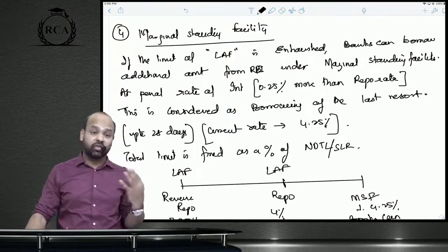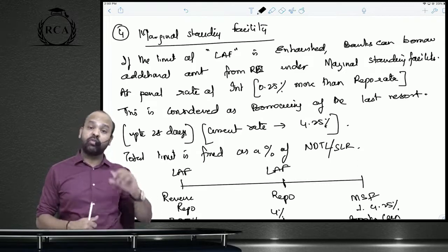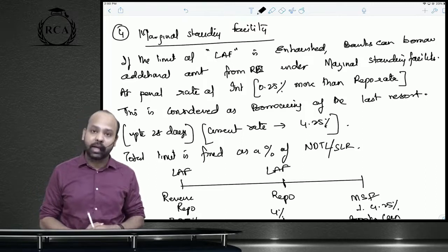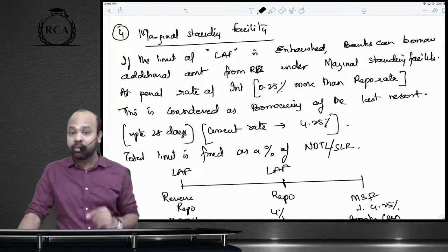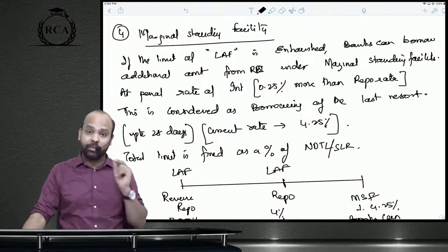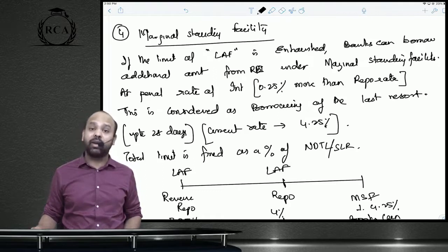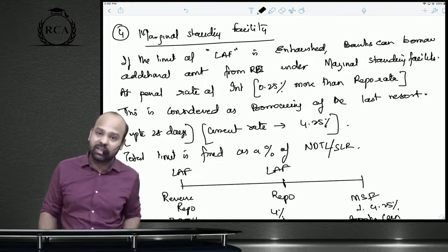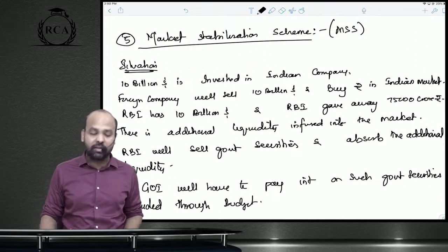The marginal standing facility (MSF) is available when banks face a shortage of funds and have exhausted their LAF limit. Banks can borrow from the RBI against securities, commercial bills, and treasury bills under MSF, up to a specified limit. The MSF interest rate is 0.25% above the policy rate, i.e., currently 4.25%. In India, the bank rate refers to the marginal standing facility rate.